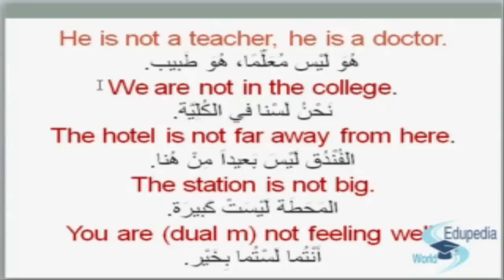The next sentence: we are not in the college. 'We are not' is نحن لسنا, 'in' is في, 'the college' is الكلية. So: نحن لسنا في الكلية. The next one: the hotel is not far away from here. الفندق ليس بعيدًا من هنا — 'far away' بعيد becomes بعيدًا after ليس.